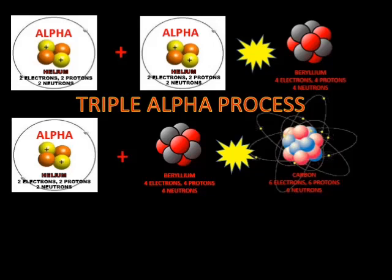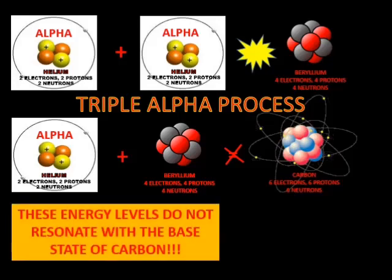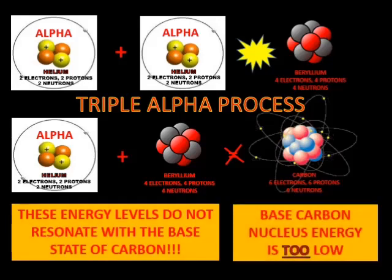But wait a minute, there is something terribly wrong here. The energy levels of the two lower nuclei do not resonate with the base carbon nucleus. The base carbon nucleus energy is too low. There shouldn't be any carbon produced from such a fusion. So how does carbon ever get produced? This was a huge puzzle and problem for physicists.